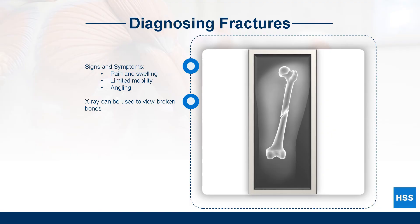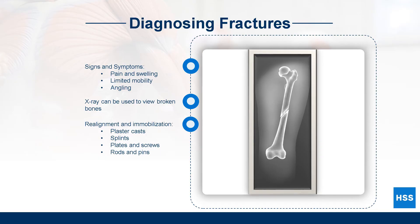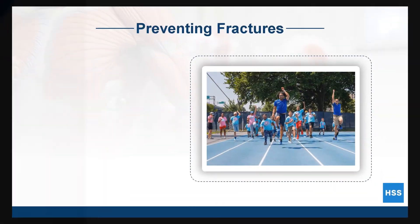In order to treat a fracture, the broken bone must be realigned and immobilized for a period of time. A fracture typically takes two to three weeks to heal properly. Doctors may use a plaster cast or splint to immobilize the bone. More severe fractures require the use of plates and screws or metal rods and pins to realign the broken bone.